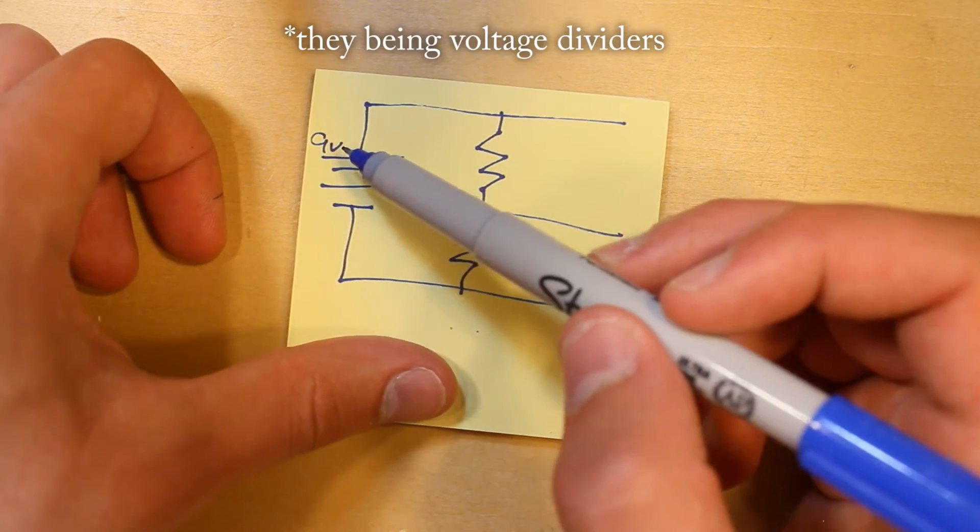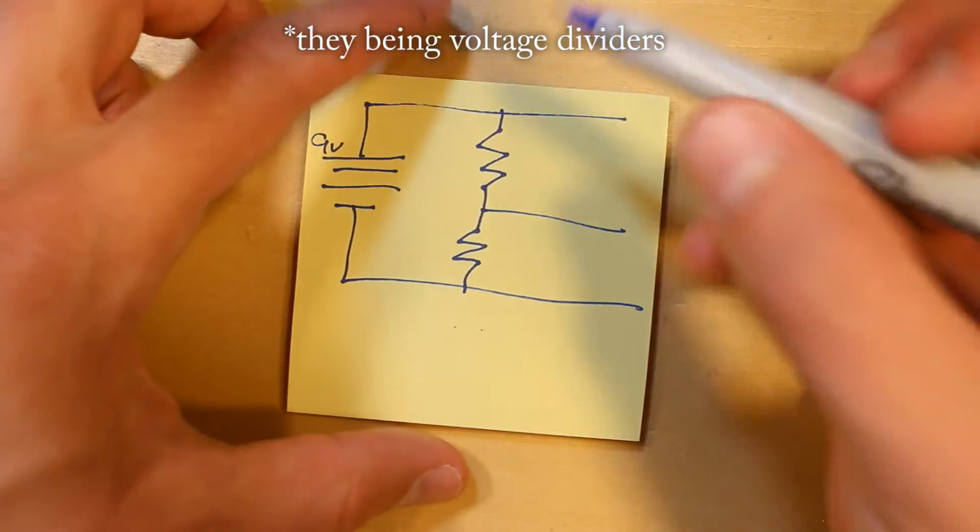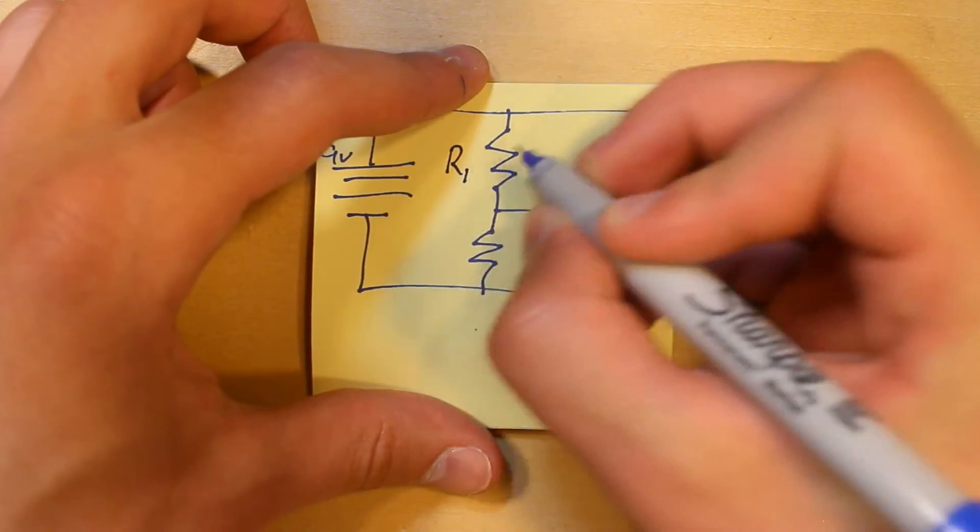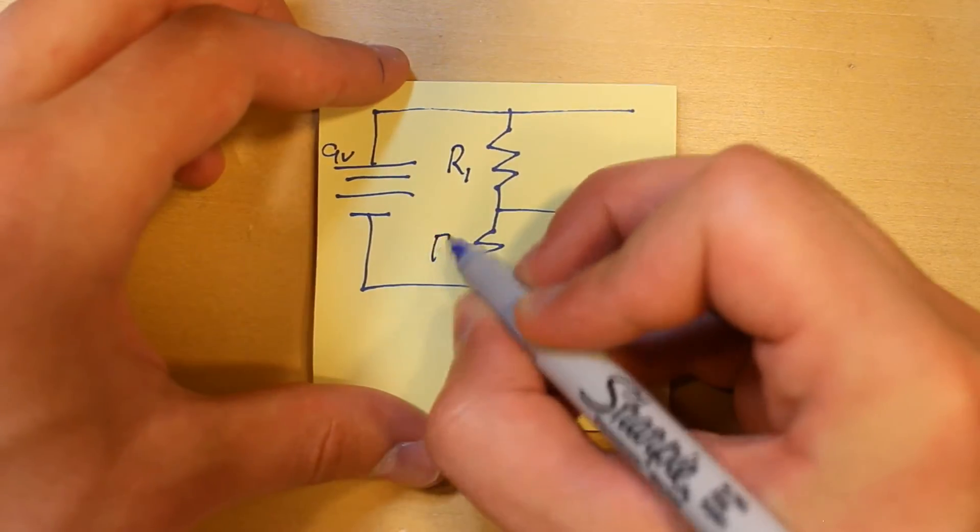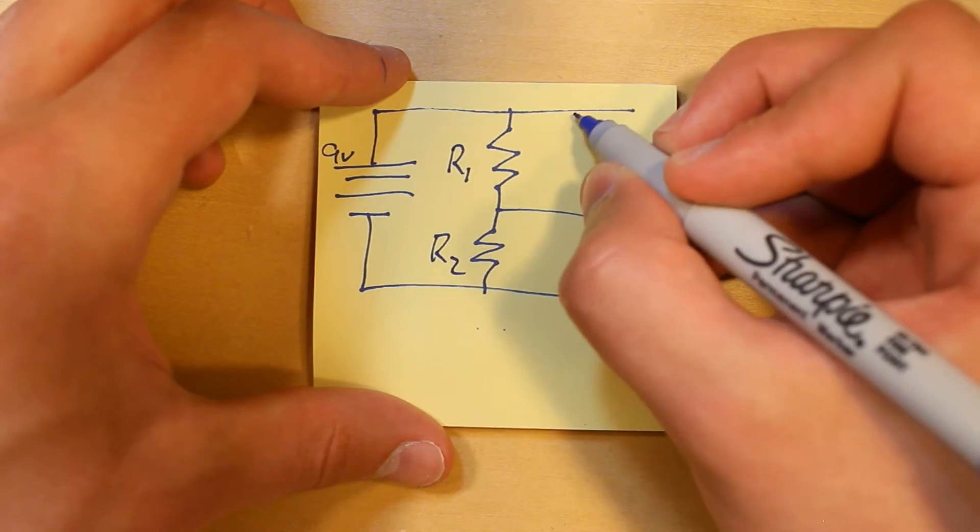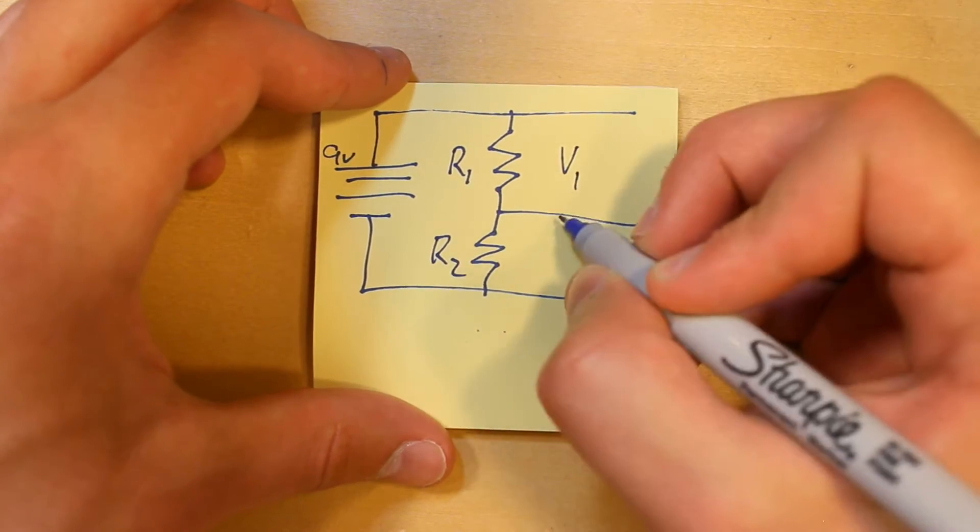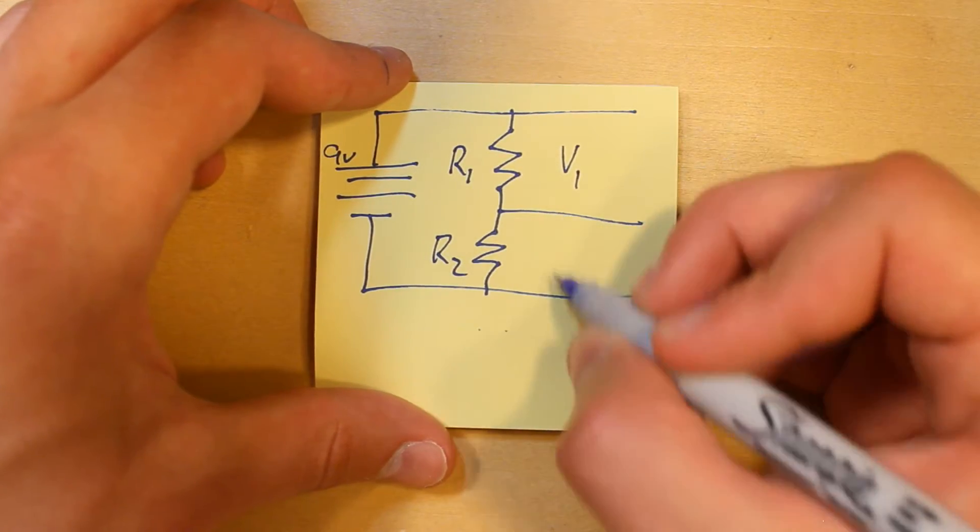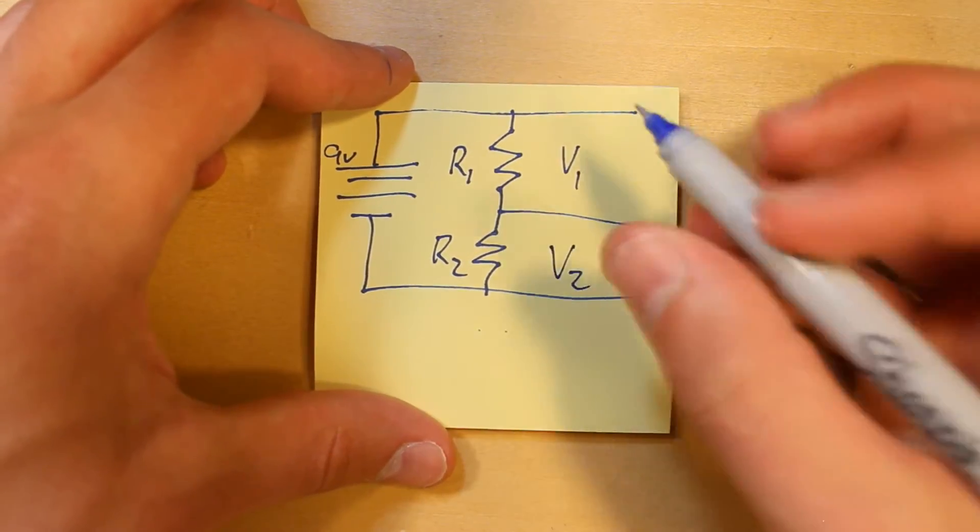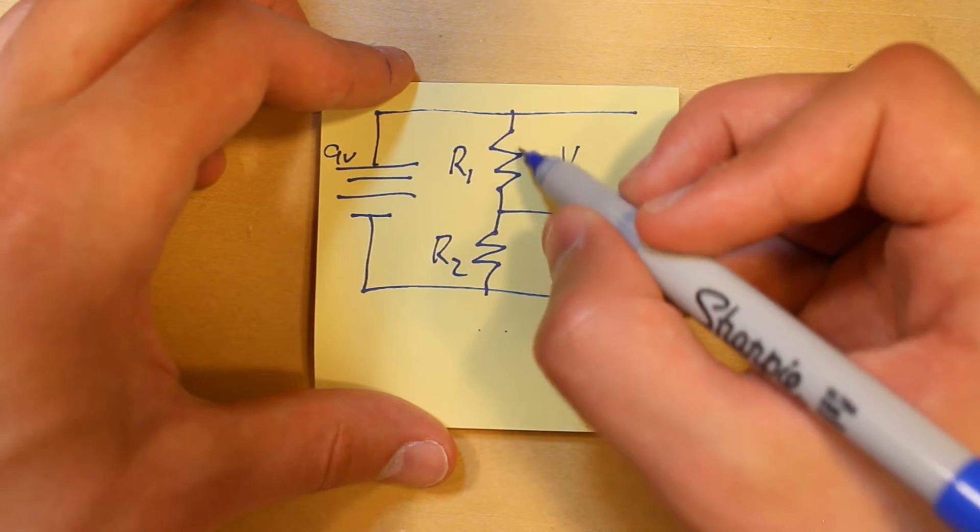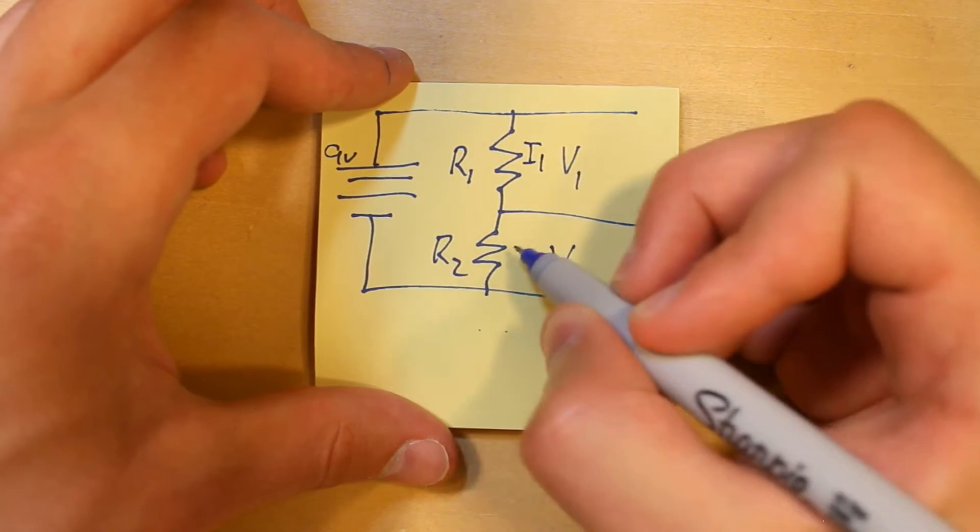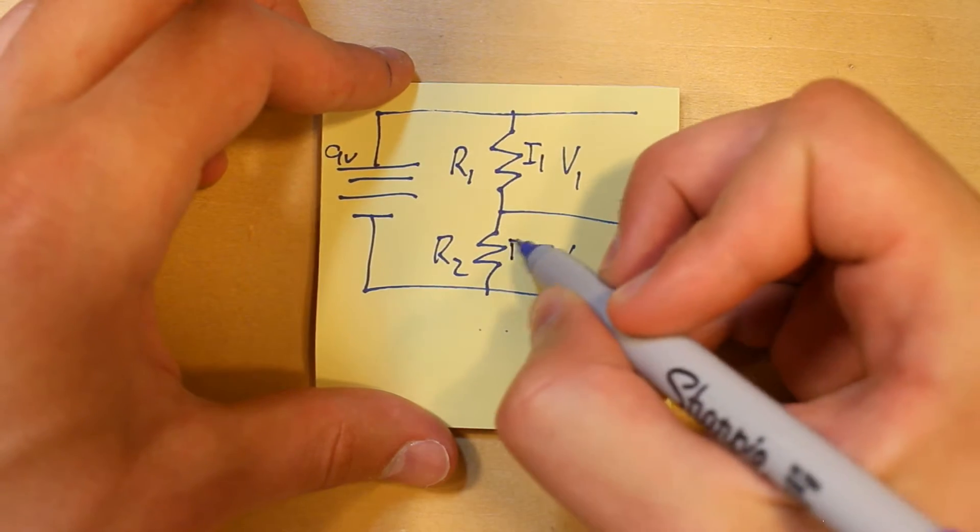But they only work if you have a really steady voltage supply. This first resistor is called R1, this second resistor is called R2. The voltage drop, or the voltage potential between these two lines is V1, and the voltage potential between these two lines is V2. The current being let through this resistor is called I1, and the current being let through this resistor is called I2.